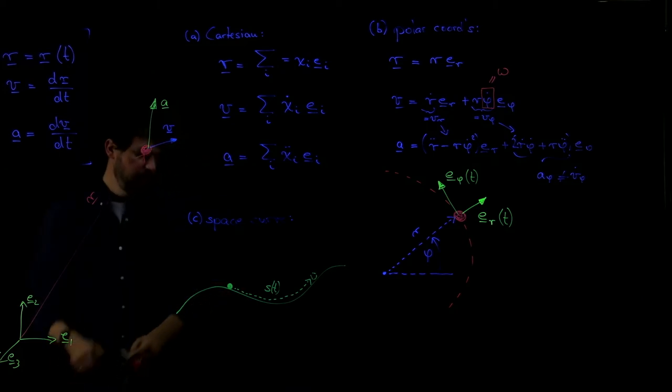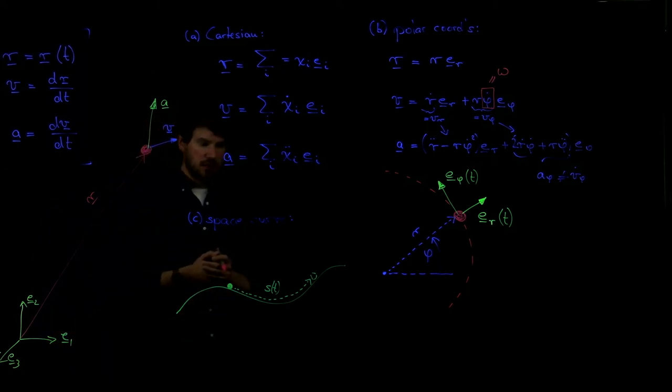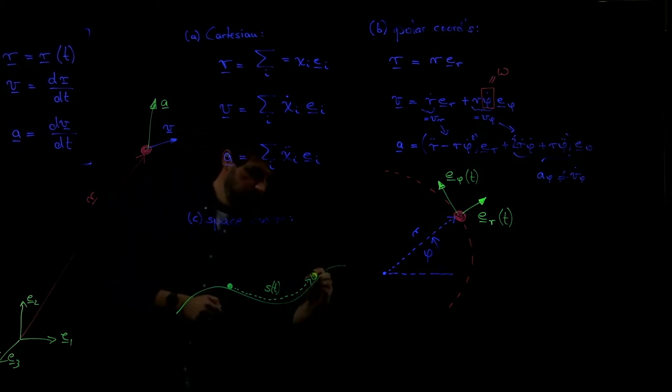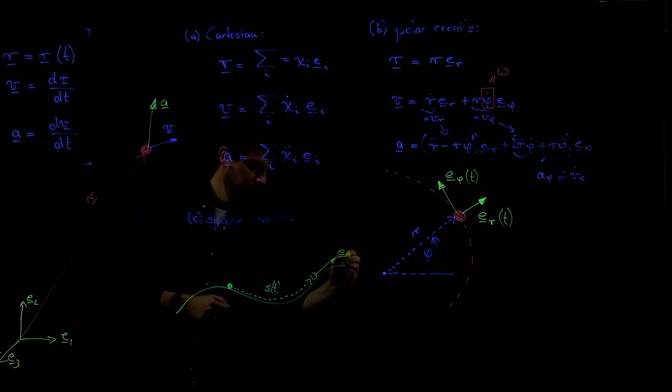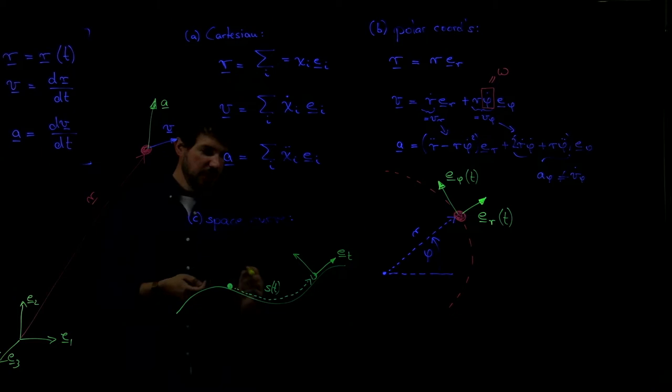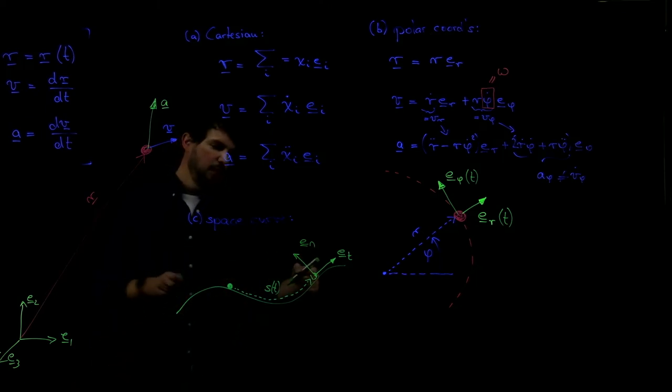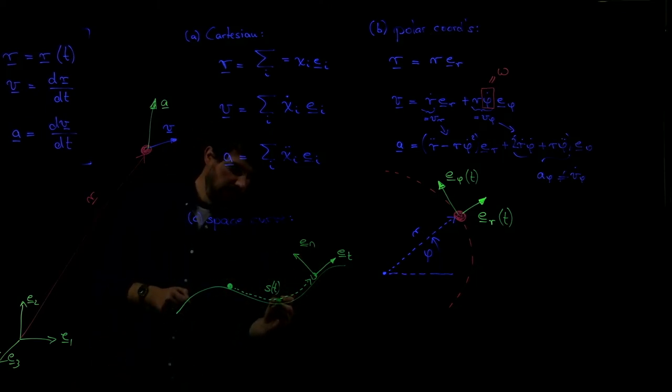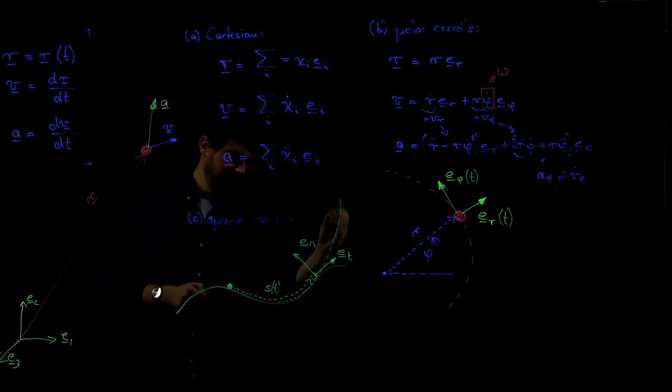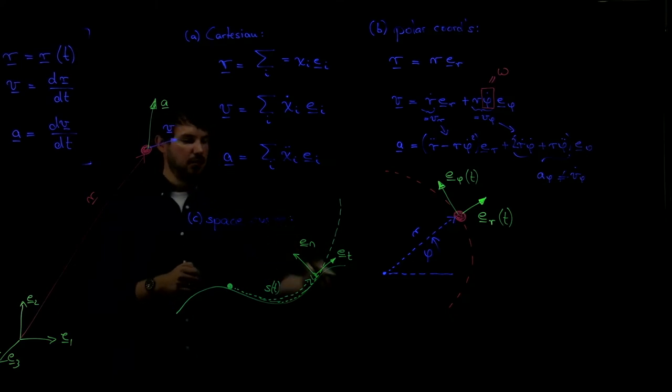What we do here is we use the path length s as the descriptor, as the one that describes where the particle has moved after a certain time. And in this case, it's most convenient to again decompose the velocity in a certain way. Namely, what we do is we introduce first a tangential component, this would be our e tangential. And then we introduce a normal component to the ground. And here it's important to find the right direction, this way or that way. That's what we call e normal.